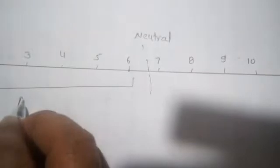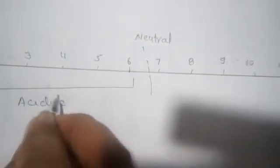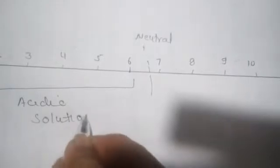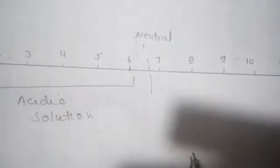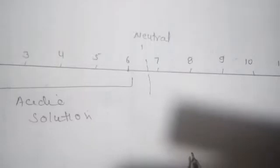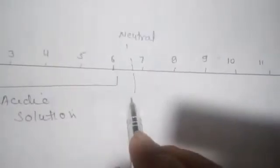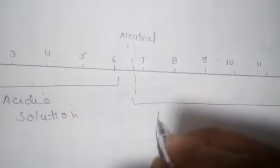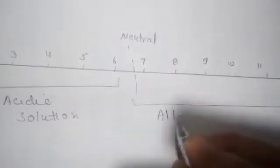In basic solution, the pH is more than 7. And the basic solution, the pH is more than 7, or alkaline.